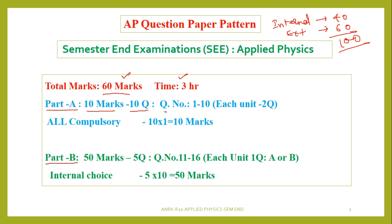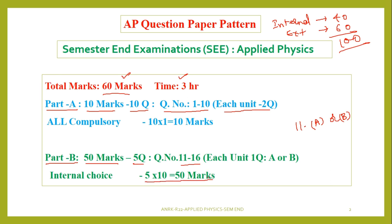Question numbers will be from 1 to 10. Each unit carries two questions, so total 10 marks. Part B consists of 50 marks. It contains five questions from 11 to 15. We get an internal choice A or B. So five questions, five units — each unit provides one question. Each question carries 10 marks, totally 50 marks. 50 plus 10 equals 60 marks.